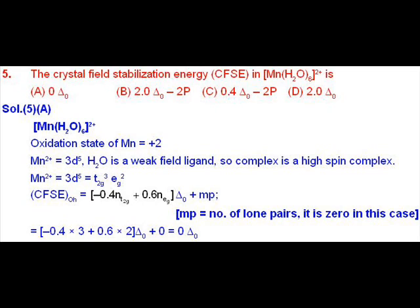In a high spin complex, the electronic configuration is T2G3 EG2. And according to CFSE, the formula of CFSE is minus 0.4 n T2G plus 0.6 n EG delta O plus mp.